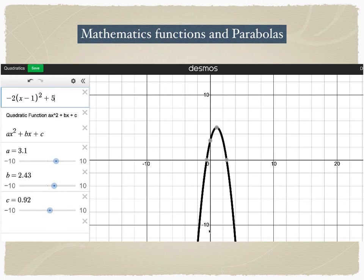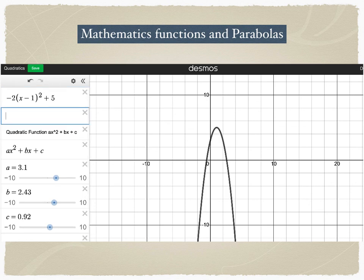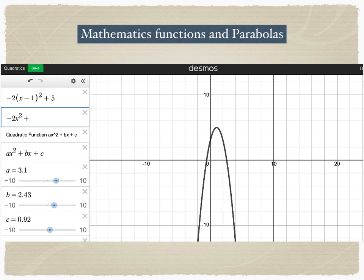If I pick a point on this graph, say 0 and 3, meaning if you plug 0 into x, you get 3 as the result. If I expand x minus 1 squared and distribute the negative 2 onto x minus 1 squared, I will get a different formula: negative 2x squared plus 4x plus 3. These two formulas look different, but they are actually the same because they describe the same parabola.